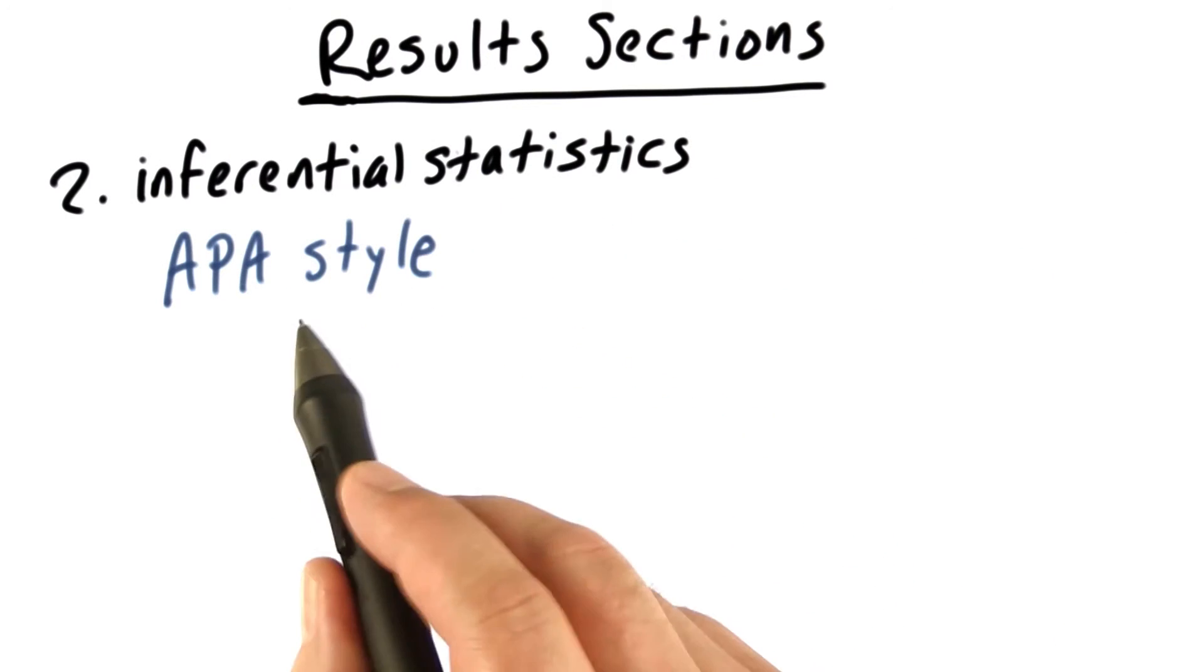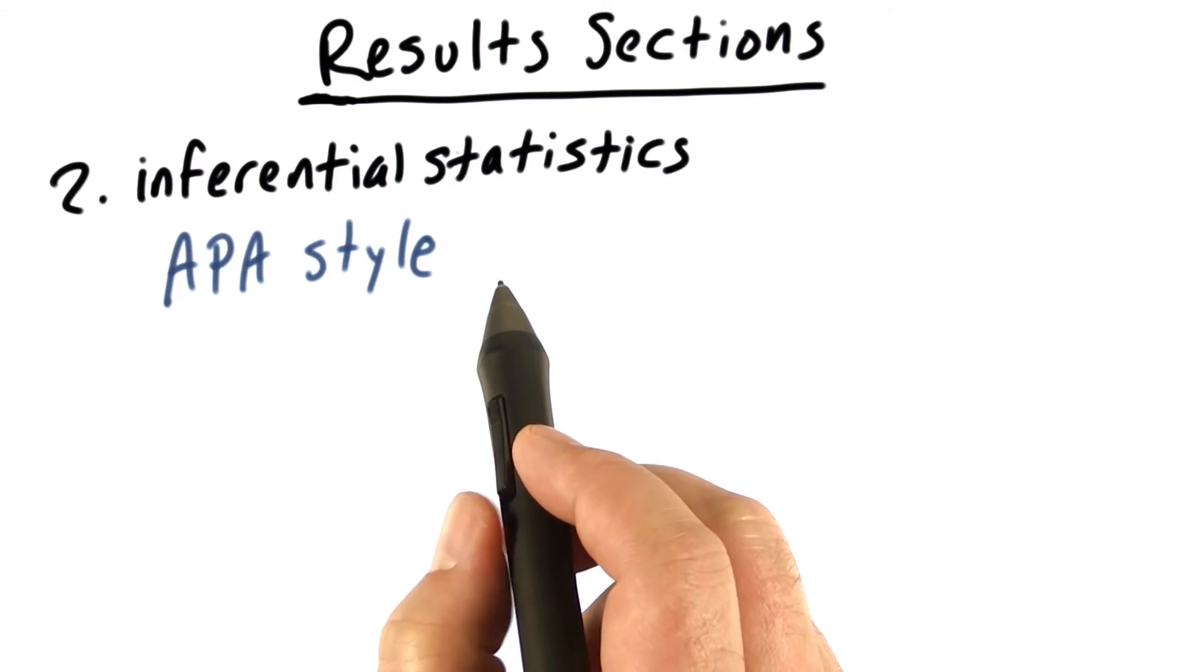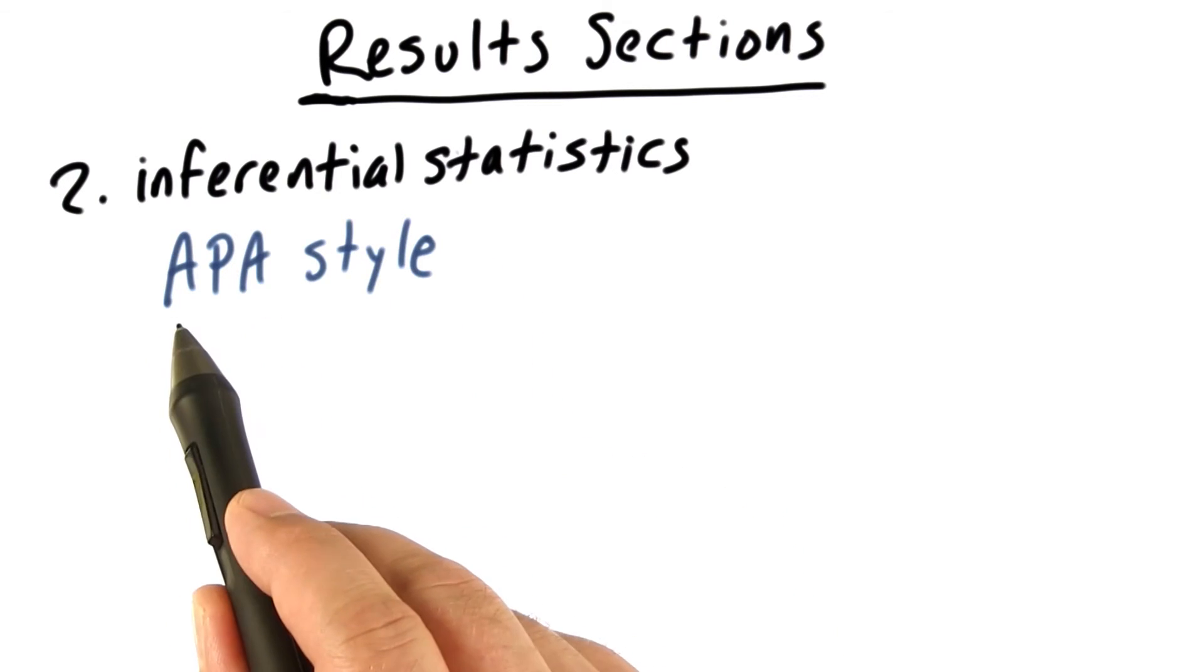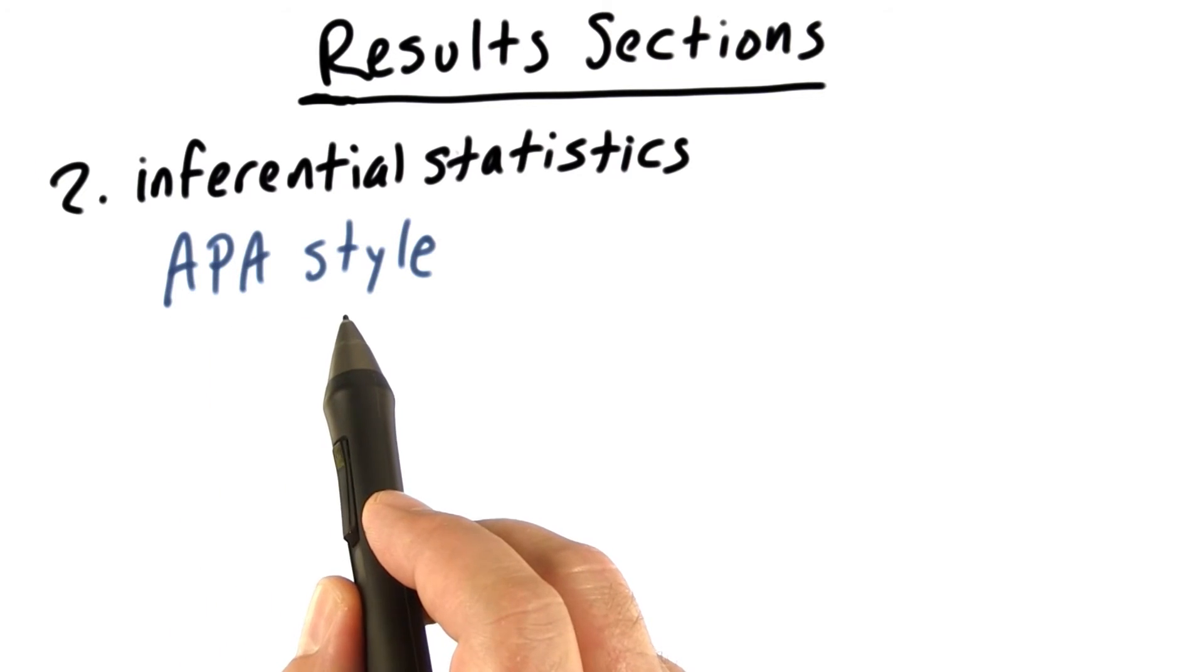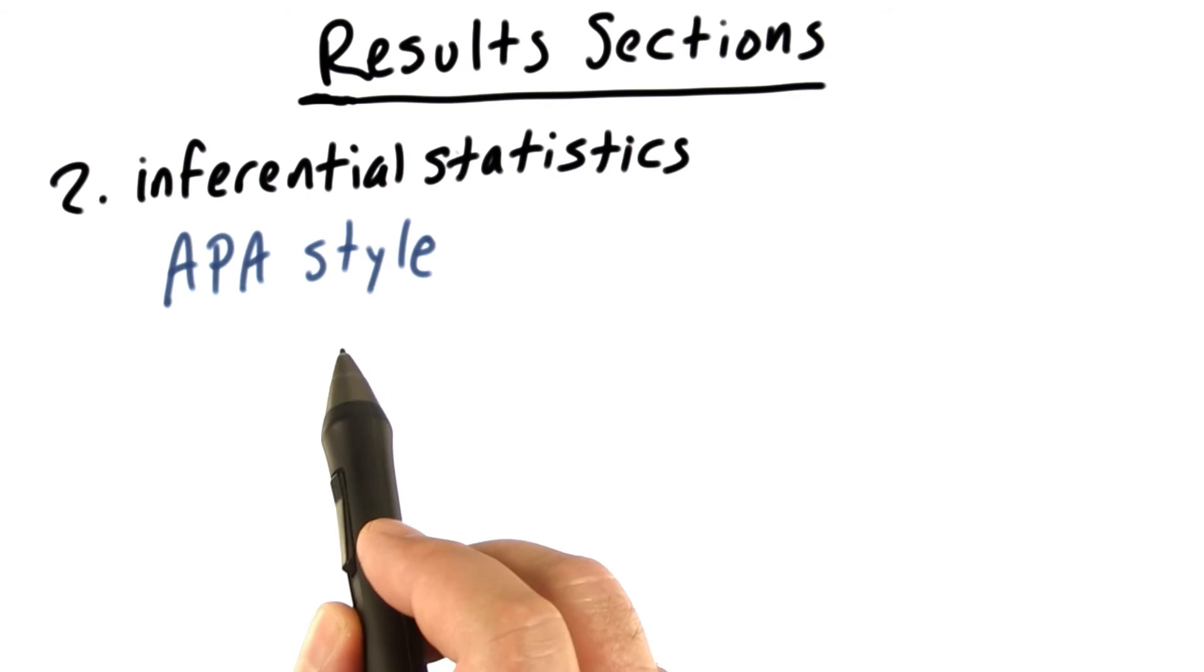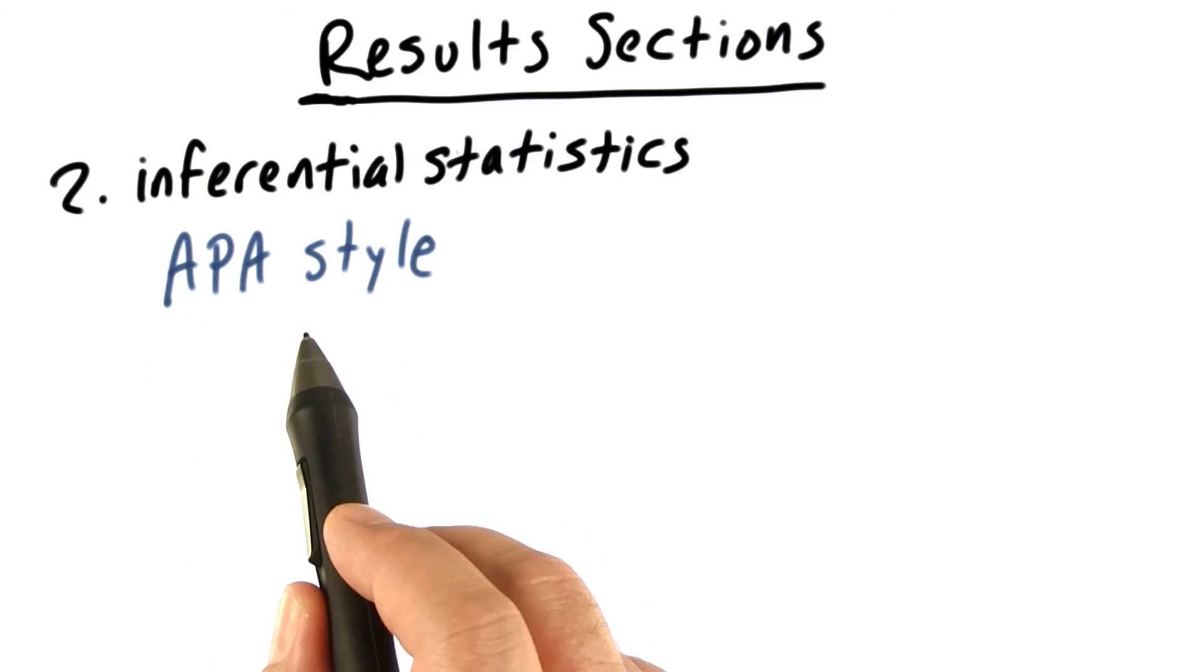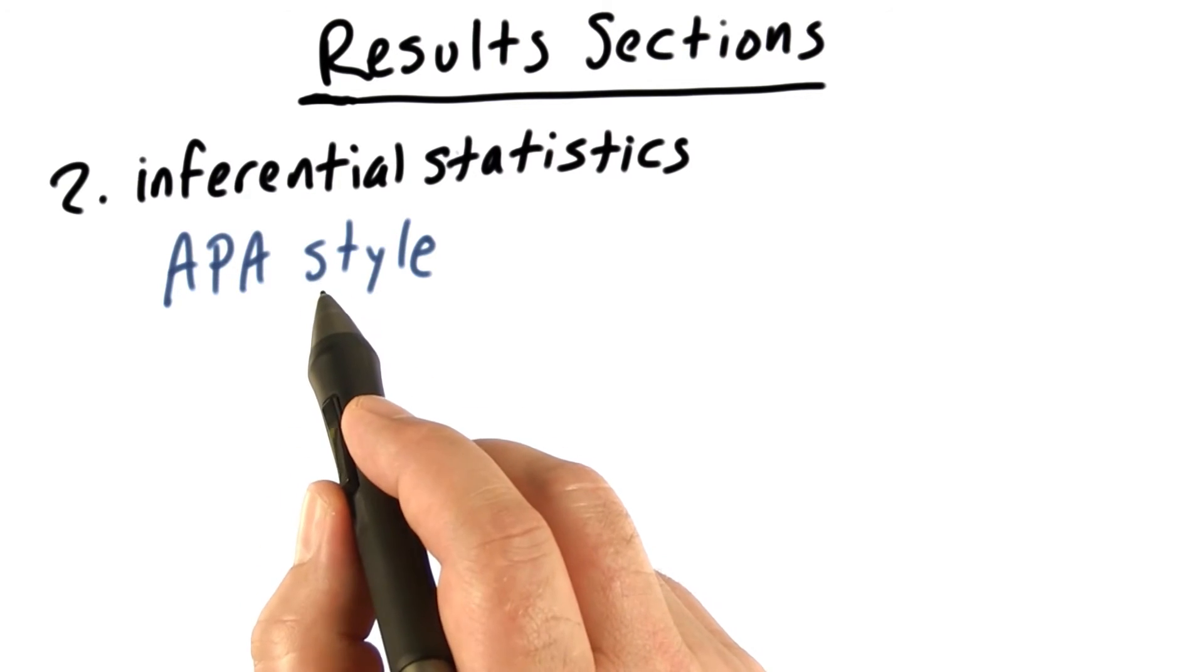For many disciplines, we use APA style to report the results of our hypothesis tests. APA stands for American Psychological Association. The APA has a whole guide on writing research papers, and one of the parts of that guide tells us how to write our inferential statistical results. I'm going to give you a brief introduction to APA style for statistics as it relates to the t-test.